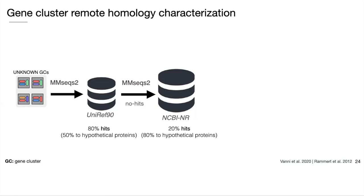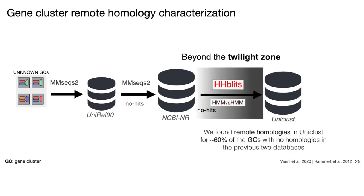We then decided to add another step: a remote homology detection to avoid overestimating the number of unknowns. We searched HMM profiles of our unknown clusters — those found with no homologies in previous databases — against the Uniclust database of HMM profiles using HHblits, another tool from the Söding group. HHblits allows searching profile against profile in a very fast and sensitive way, going beyond the twilight zone of sequence similarity set around 20%. To emphasize how important this step was, we identified remote homologies in Uniclust for more than 60% of gene clusters that were found with no homologies in the previous two searches.